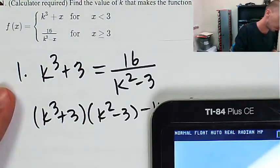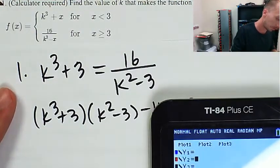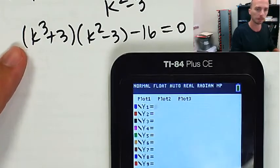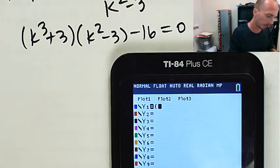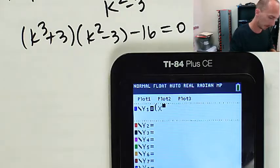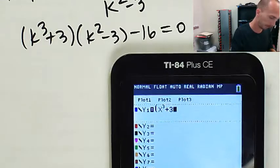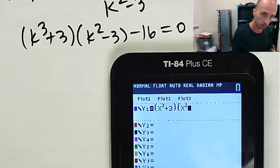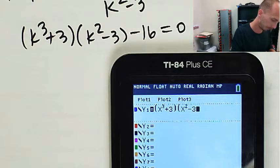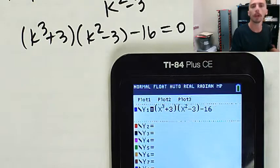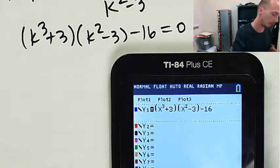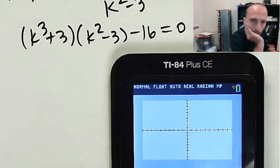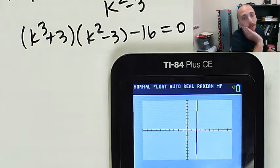I'm going to go over here to y equals. I'm going to use x for k. So k to the 3rd plus 3 multiplied by k to the 2 minus 3 and then minus 16. I'm going to zoom to the standard window. I've already done this problem. Yeah, it's about 2. Okay, but you're not going to report 2. That would not be good enough.